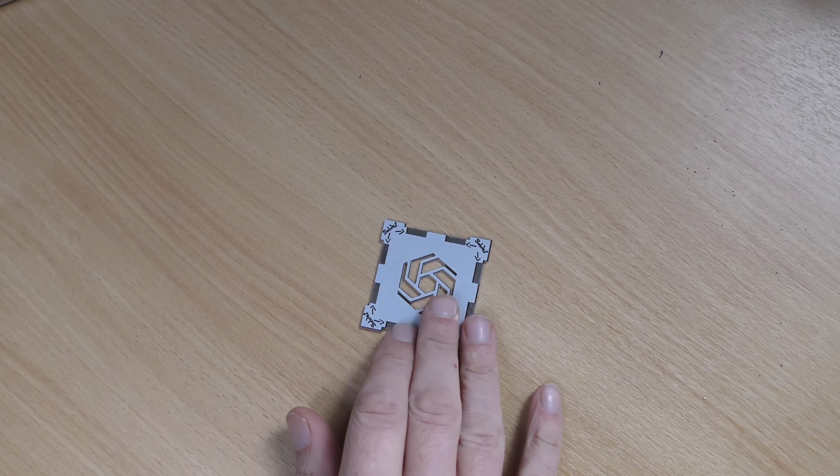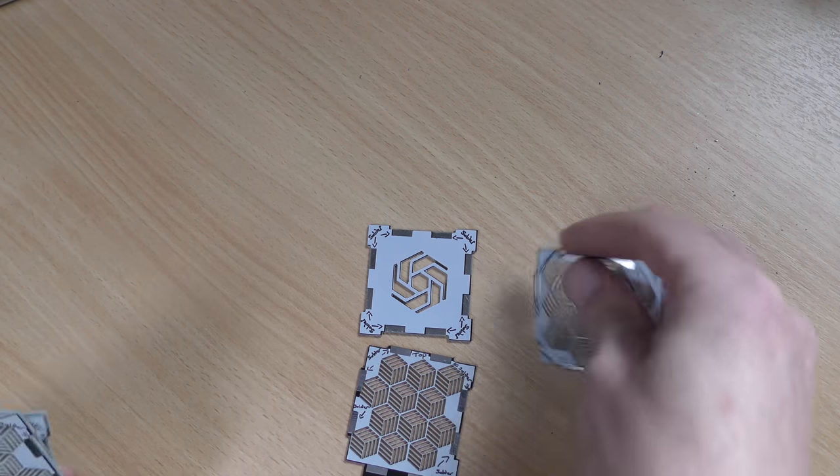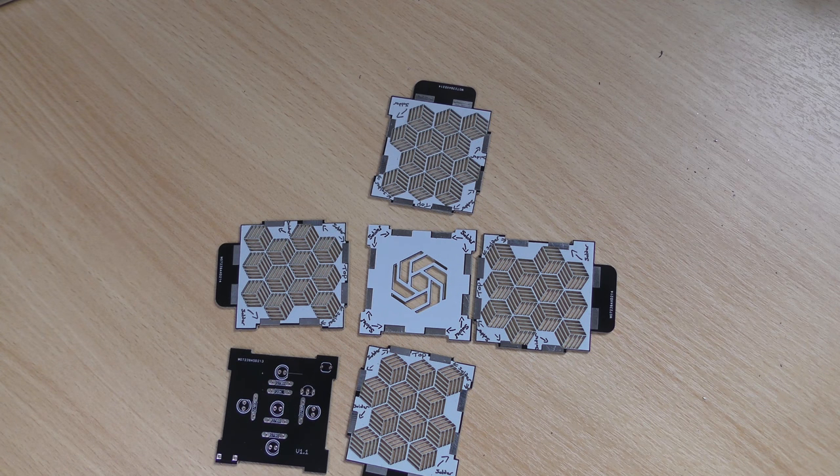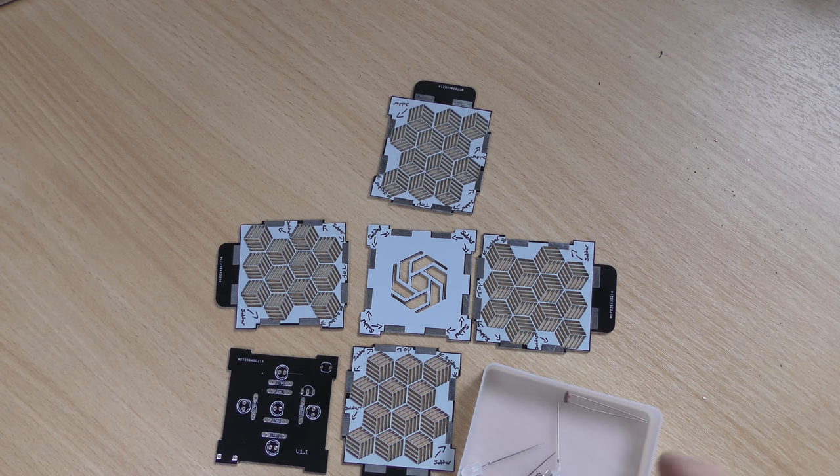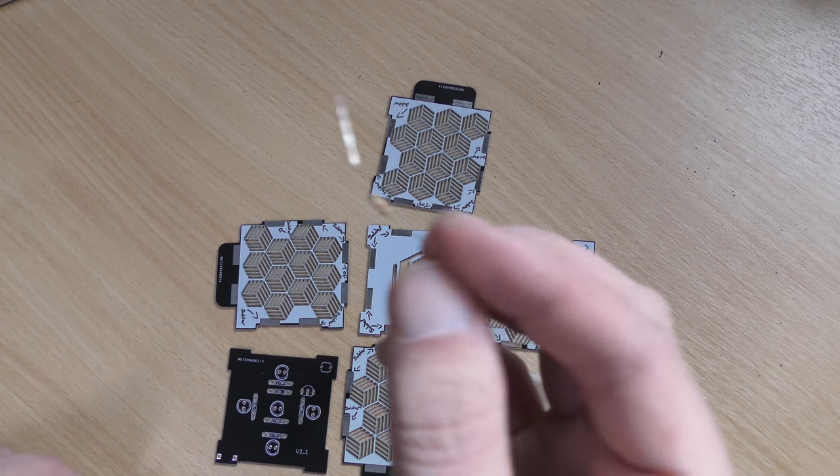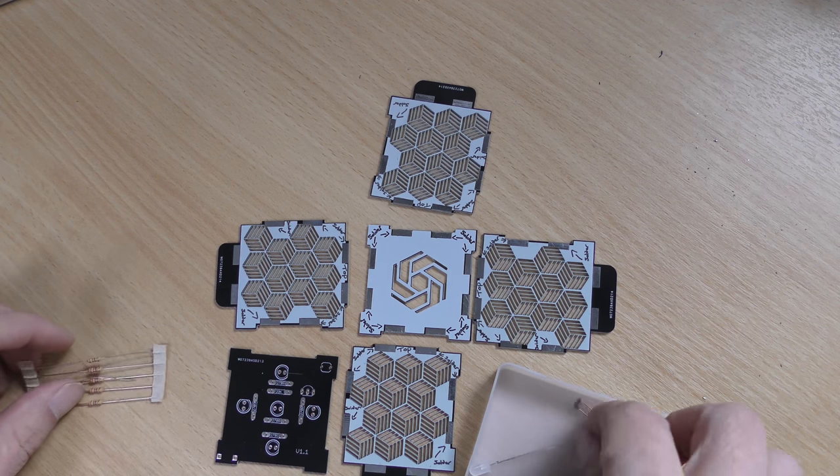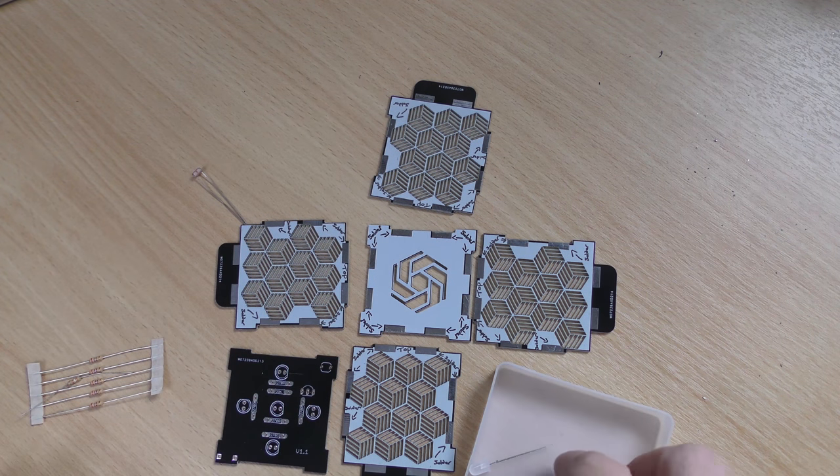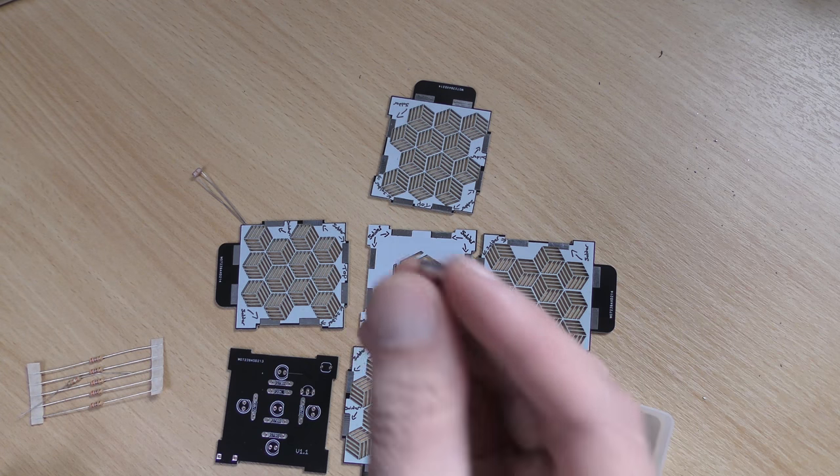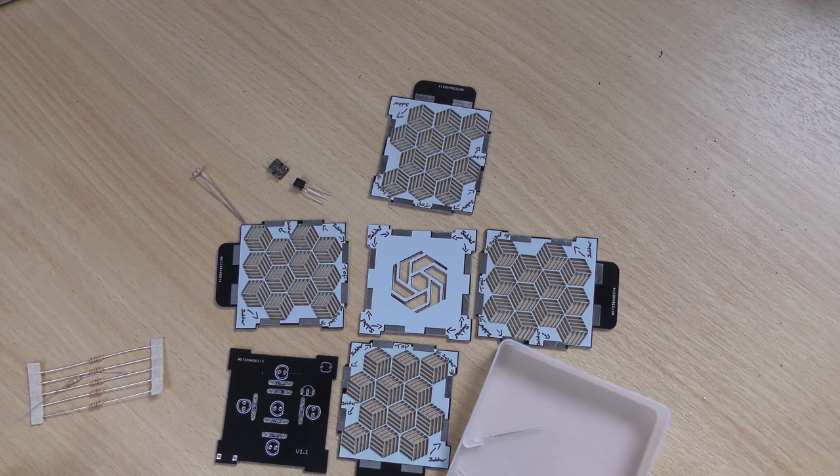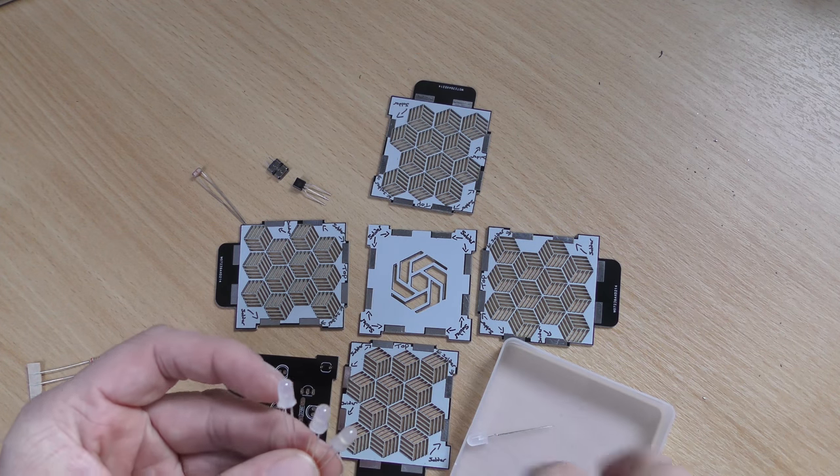So first of all you want to check that everything's in the kit. You've got a lid, four sides, and a base. You've also got five 270 ohm resistors, one 39k ohm resistor, one mini photocell or an LDR, a little USB power connector, a transistor, and five white LEDs.